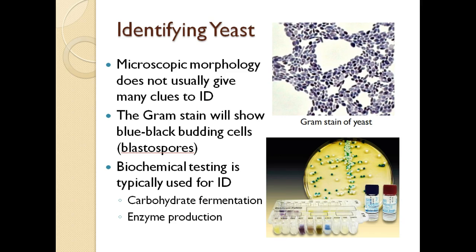Yeast can be gram stained, but it's important to keep in mind that although yeast look gram positive, they are not gram positive — only bacteria can truly give a gram positive or gram negative reaction. Yeast stain a very dark purple color because they have cellulose in their cell walls, which attracts the iodine in the gram's iodine step, staining them a purplish-black color. The blue-black budding cells you see are blastospores, the reproductive structures of the yeast. To identify yeast in the laboratory, we typically use a carbohydrate fermentation panel and look at the enzymes the yeast produce.